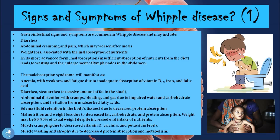So what are the signs and symptoms of Whipple disease? Gastrointestinal signs and symptoms are common and may include diarrhea, abdominal cramping and pain which may worsen after meals, and weight loss associated with the malabsorption of nutrients.